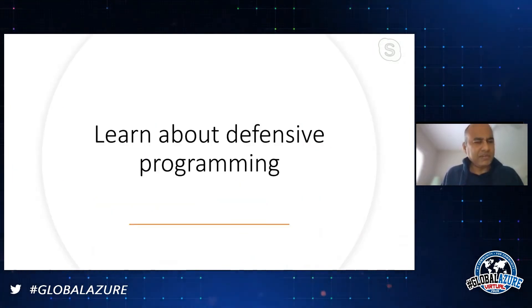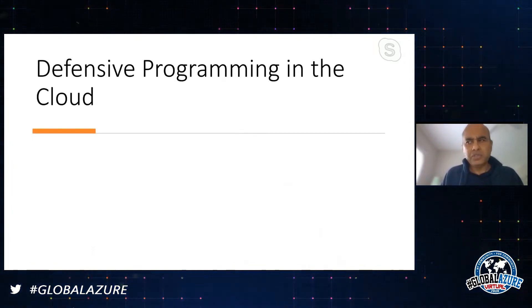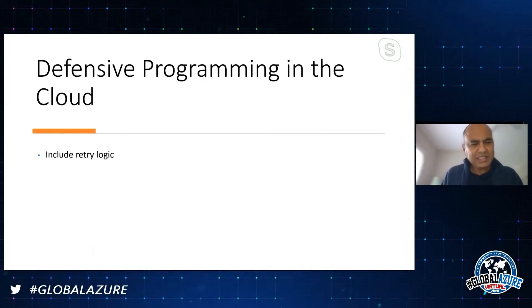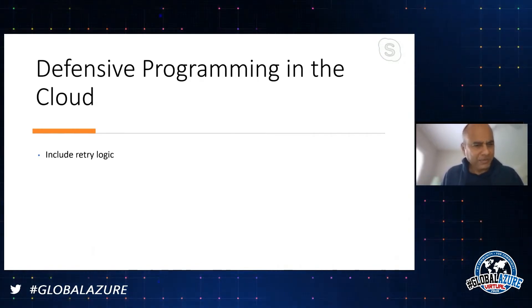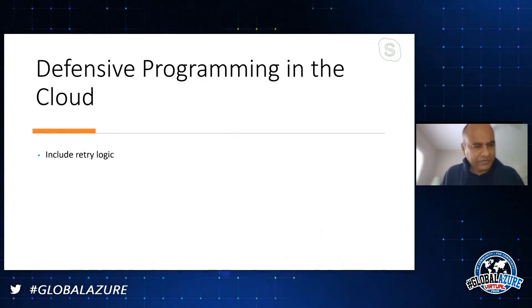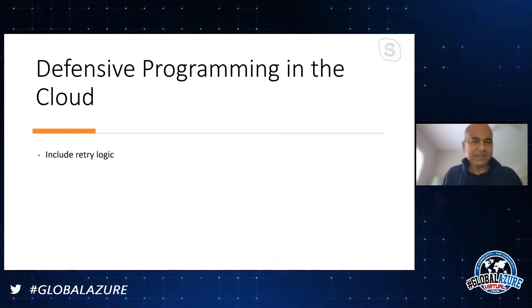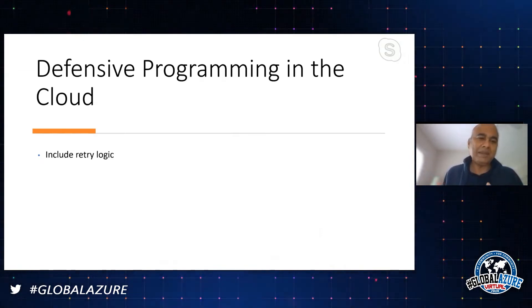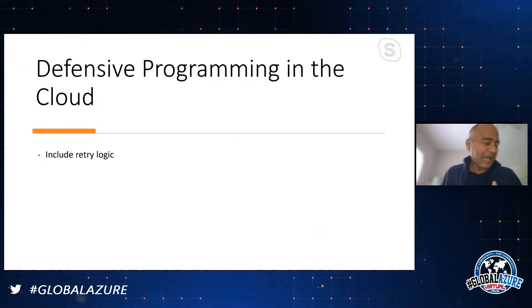Let's learn about defensive programming techniques. First and foremost, I want to talk about retry logic, which many of you may be familiar with. Transient faults - faults that can go away in a period of time - can happen anywhere: in an on-premises environment, in a private cloud, and in a public cloud as well.